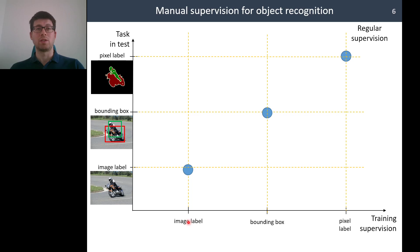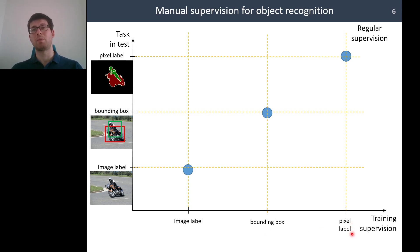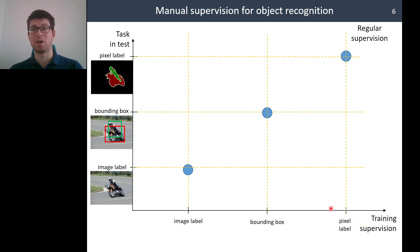For object detection, the standard annotation is bounding boxes for each instance. For semantic segmentation, it is pixel-level labels during training. At test time, we require the same level of detail from our method.